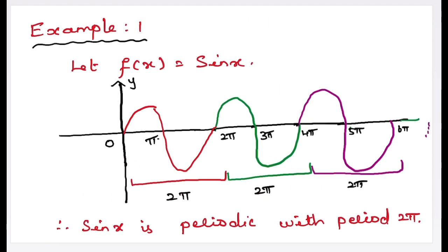Now we can illustrate this with an example. Let f(x) = sin x. The graph of sin x is shown here, with one wave in red color, the next wave in green color, and also in purple color — it goes on. The length over the x-axis is equal to one period, which is 2π. That is, the waves repeat again and again with a gap of 2π. Therefore, the function sin x is periodic with period 2π.